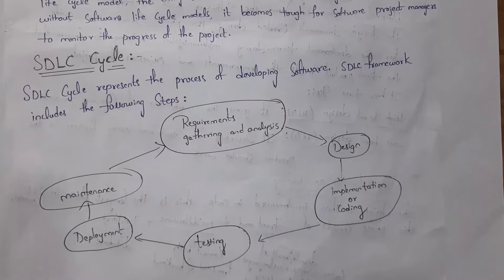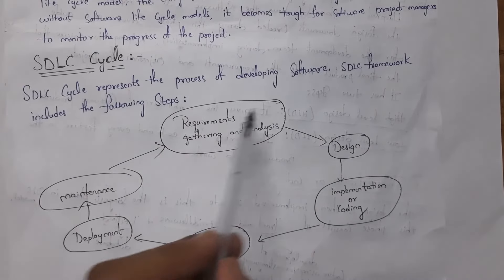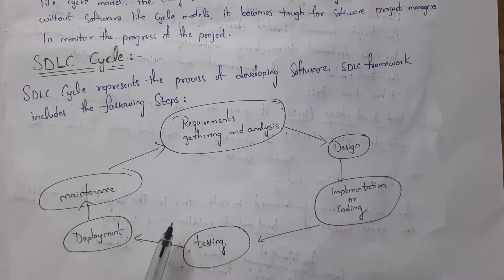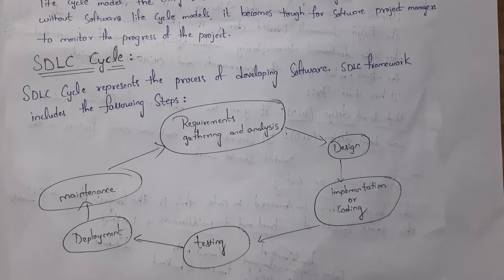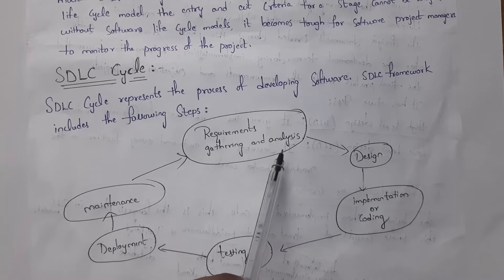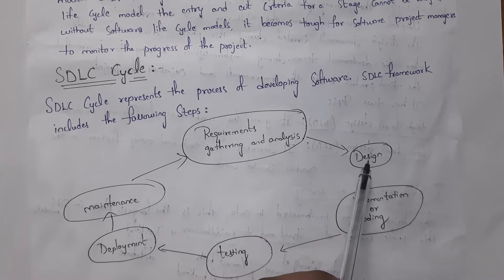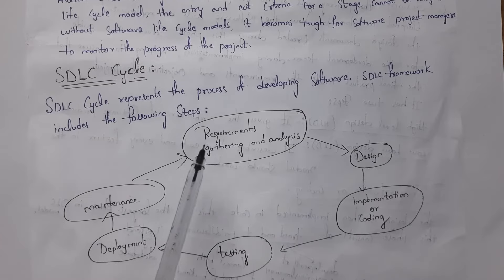This is the complete software development life cycle. By following this process — these steps — we can develop high quality software. The first step is requirement gathering and analysis, next is design, then implementation or coding, then testing, deployment, and maintenance. I will explain all these steps one by one in detail.